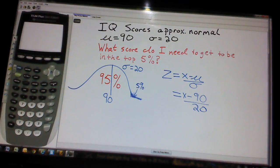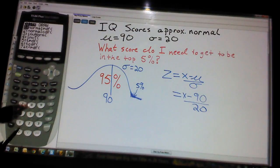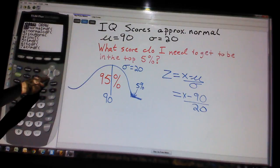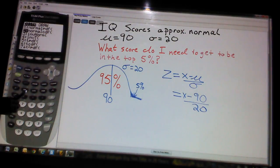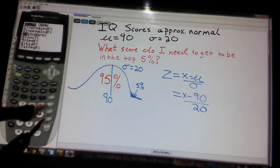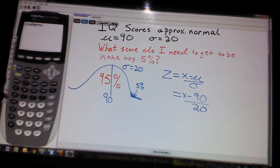So that is what we're plugging into our calculator. So we go second, vars, never pdf, not cdf, it's inverse norm. When we're looking for z and know the percent, we use inverse norm.